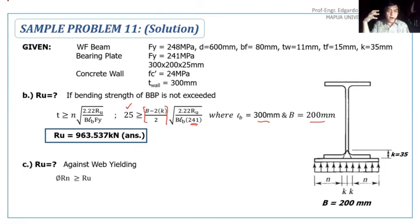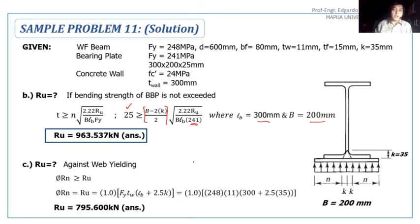For the third question, what is the Ru against web yielding? A specific web failure was given: web yielding. Again, LRFD design principle - design strength should be greater than or equal to Ru. What is the phi for web yielding? It's 1.0. This is a support reaction at the end of the beam. If it's at the end of the beam, we use 2.5 of K. The formula is phi times Fy times thickness of the web times LB plus 2.5K. The LB should be correct at 300mm. Direct substitution of all values gives us the Ru.